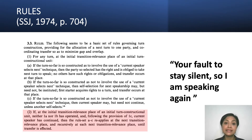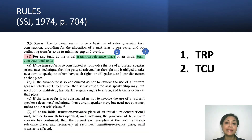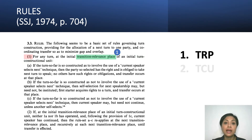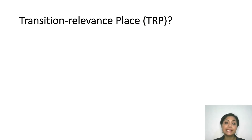Next, let's discuss a concept which provides the bedrock for these rules. Pay attention, this is very important. That concept is encapsulated in the term Transition Relevance Place, or TRP, and Turn Constructional Unit, or TCU. Be familiar with these two terms because in CA, these two terms are used a lot and they are everywhere. Let's go to TRP first.